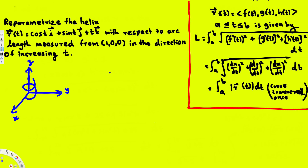Let's see how we can parameterize this helix with respect to arc length. The arc length formula for a vector function is: first we have the function, we find the derivative of that function, take the square root of its magnitude, and then find the integral with the upper and lower limits.